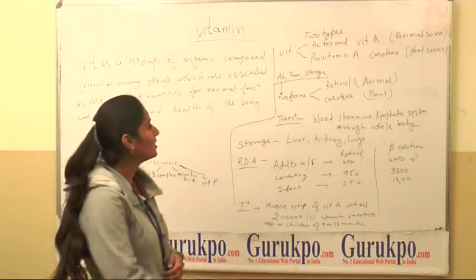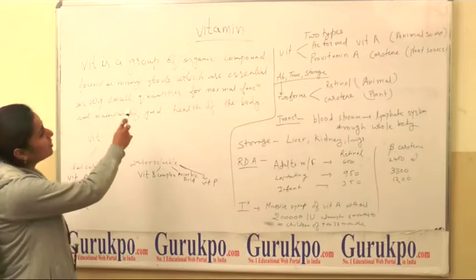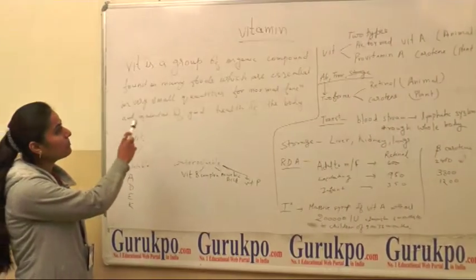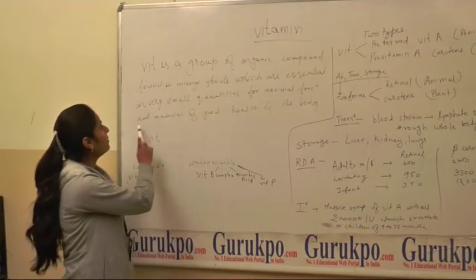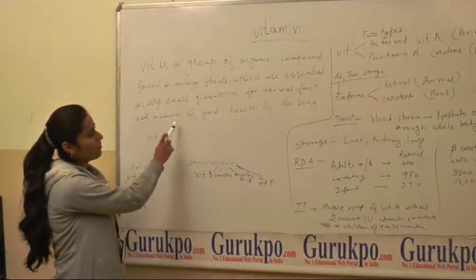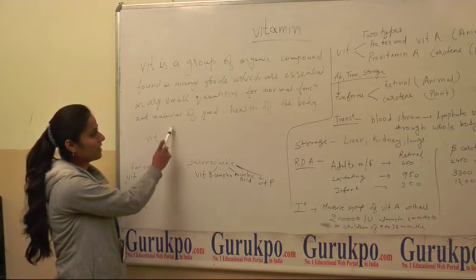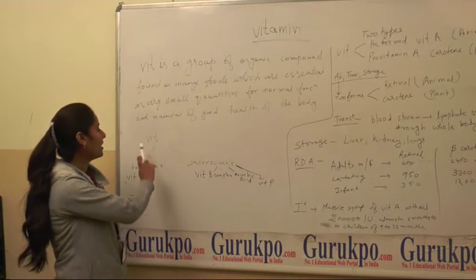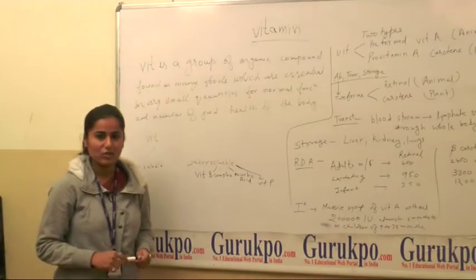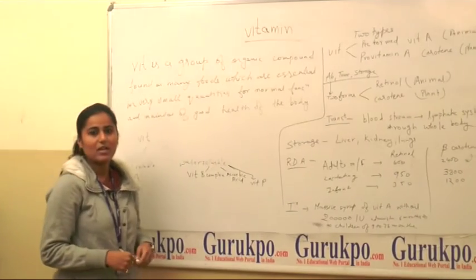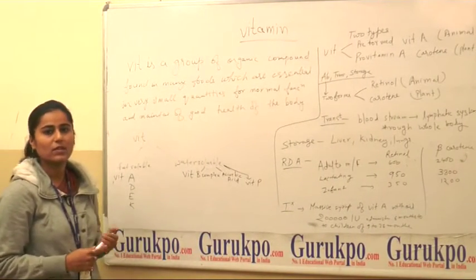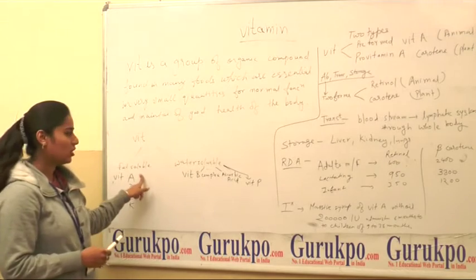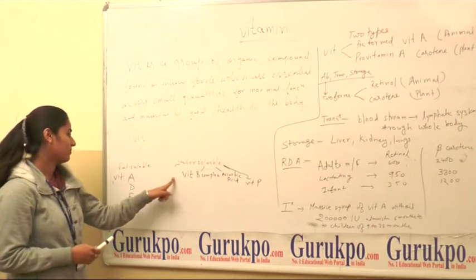So what is a vitamin? A vitamin is a group of organic compounds found in many foods which are essential in very small quantities for normal function and maintenance of good health of the body. Vitamin is of two types: fat-soluble vitamin and water-soluble vitamin.